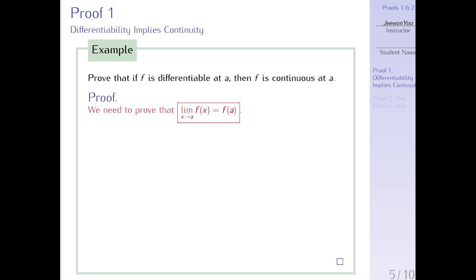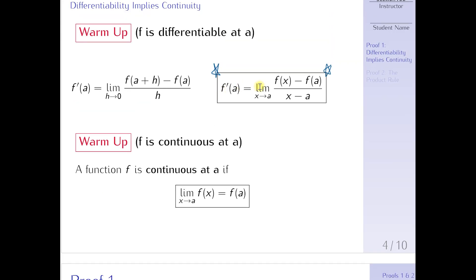Okay, I think we're ready to prove the following statement: if f is differentiable at a, then f is continuous at a. Whenever I try to prove a statement, I always look at the conclusion and remind myself what do I want at the end of the proof. Here, the conclusion is f is continuous at a. So I write down the definition of continuity, which is limit as x approaches a, f(x) equals f(a). This is what we want at the end. The assumption is that f is differentiable at a, which means f'(a) equals this limit expression and it is a finite value.